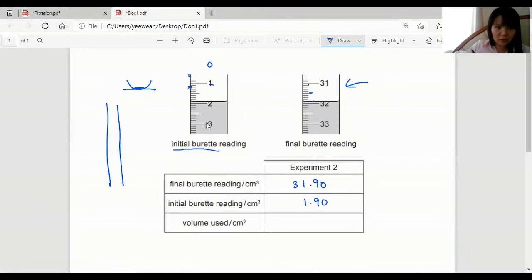So if you imagine 1 is somewhere here and 31.9 is somewhere here, this much escaped into the conical flask. So that would be the difference between 31.9 and 1.9.